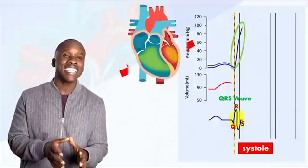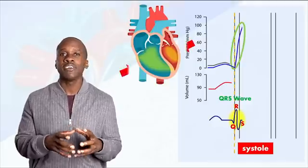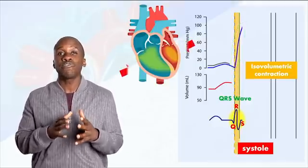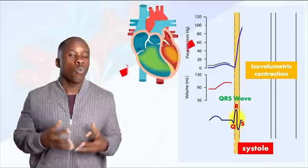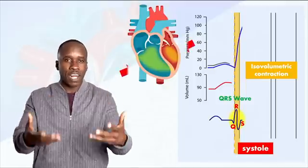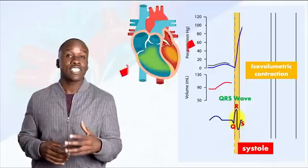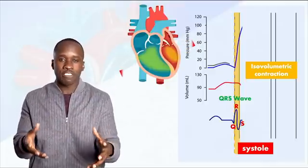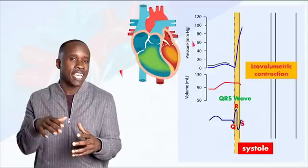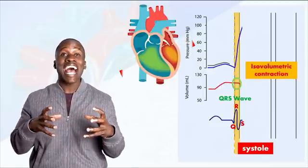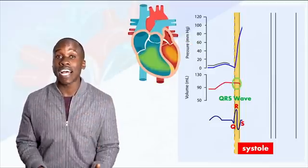Now, there's a key thing that happens when the ventricles contract. As you see here, there's a short phase called isovolumetric contraction. What exactly is that? Well, the word isovolumetric means the volume stays the same. In this case, the amount of blood in the ventricles remains the same. Look at the ventricular volume. It's pretty much a straight line. And that's because when the ventricles start contracting, that actually closes all the valves.